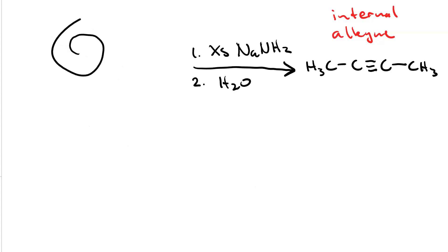You might be thinking what substrate could I use with the two steps: first excess sodium amide and then the workup with water to make an internal alkyne. We just made propine by using 2,2-dichloropropane with this two-step method.